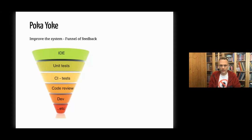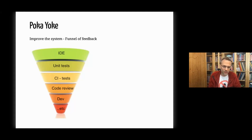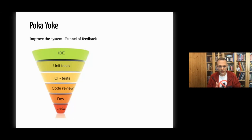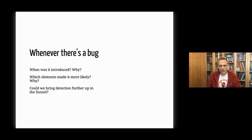What defines a good system is catching errors early. In the developer world, an ideal system catches a lot of errors in the IDE — type errors, for almost no cost. Unit tests catch more, CI catches some, then code reviews, dev platforms and staging, and finally production. We want to build a system where we move the detection of most errors up the funnel — it's not about zero bugs, it's about improving the shape of that funnel.